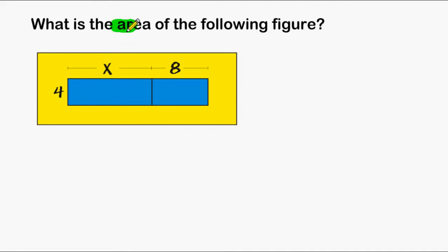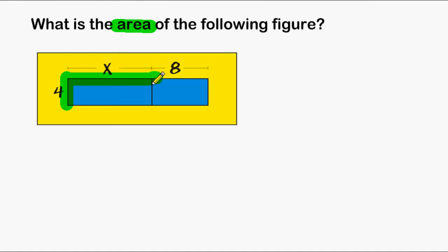In this problem we have to figure out what is the area of the following figure. We can see that the dimension given in this figure is a length of 4, and the distance from this point to this point is x, and the distance from this point to this point is 8.